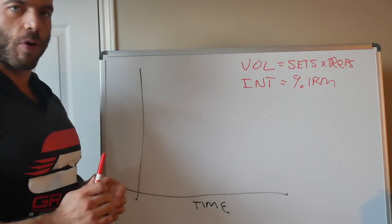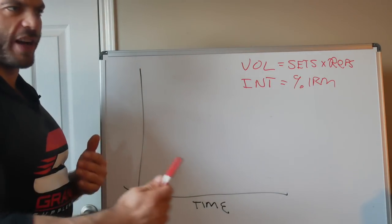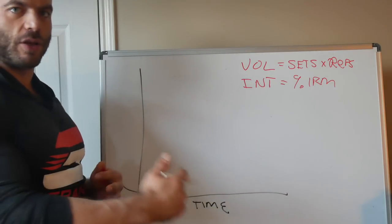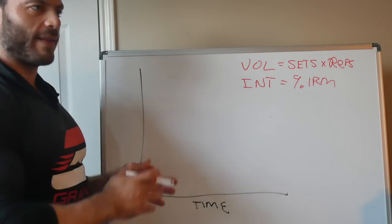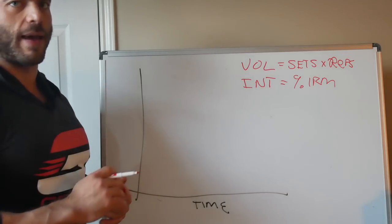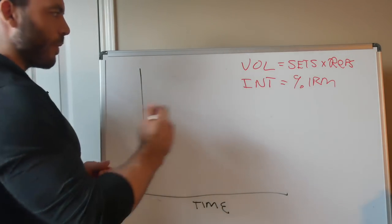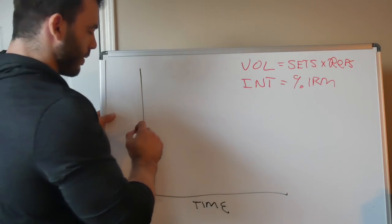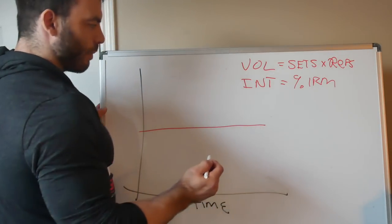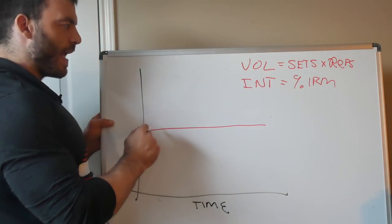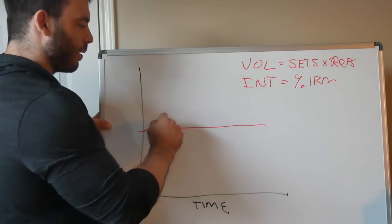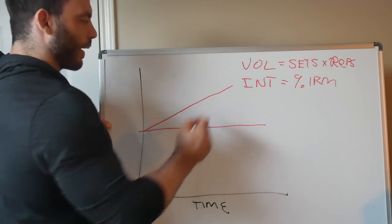So let's think about a program like a generic 5x5. In those, you generally have the same template that you do every week. And maybe one day's heavy, one's medium, one's light. But your goal over time is to add weight to the heavy workout each time. So in that situation, your volume is constant. You're doing the same volume every workout. But your intensity is continually increasing because you're continuing to add weight every workout.